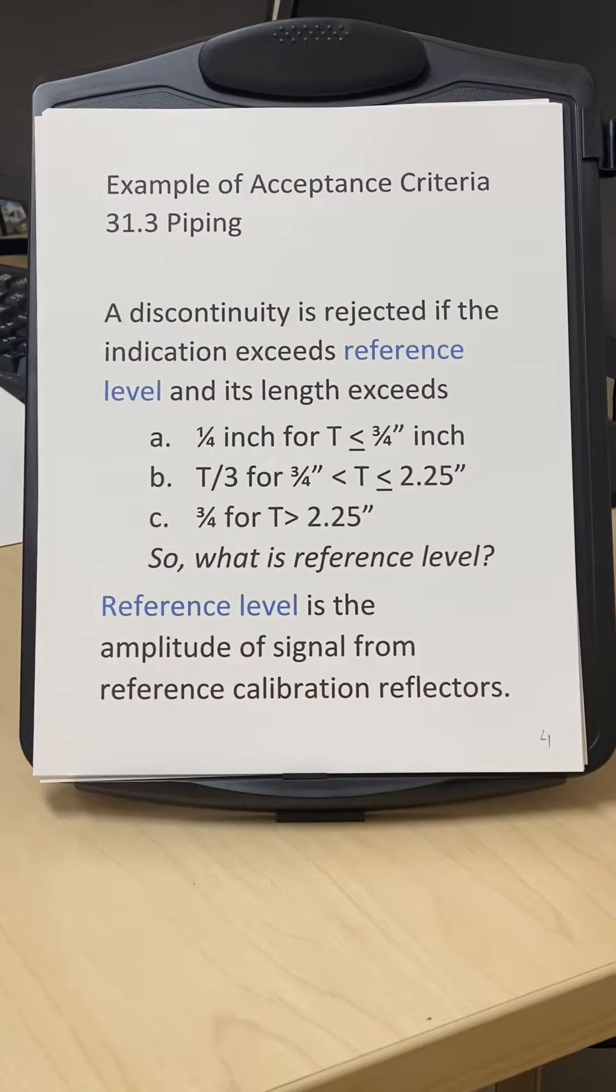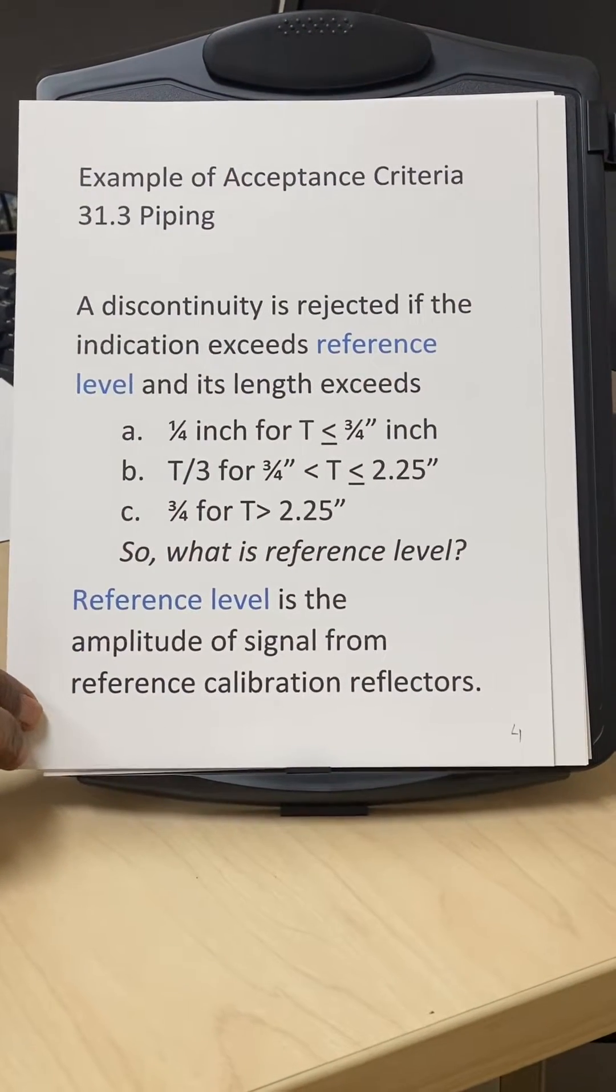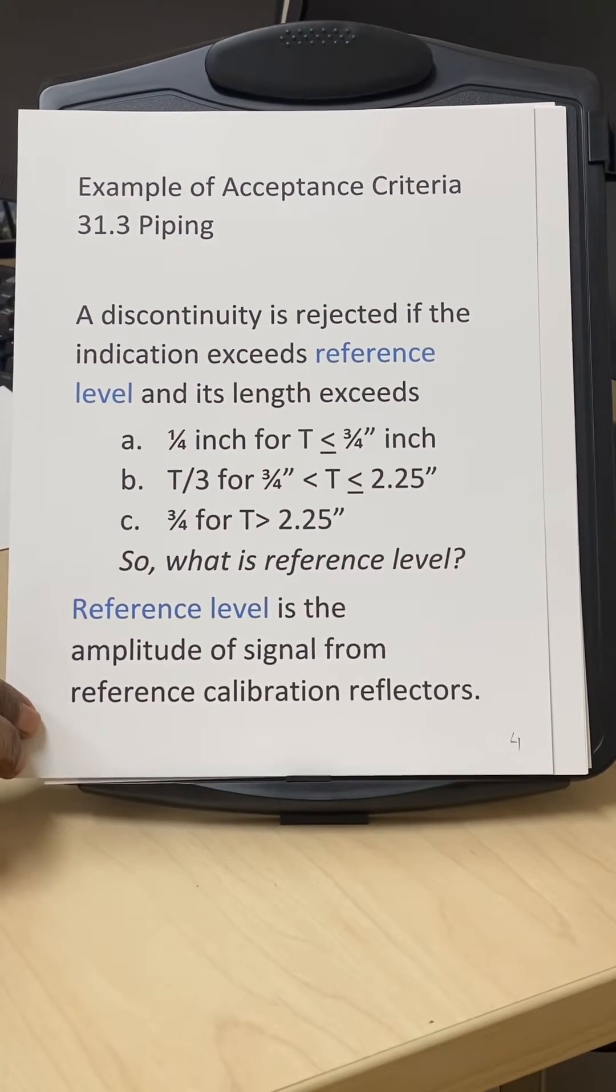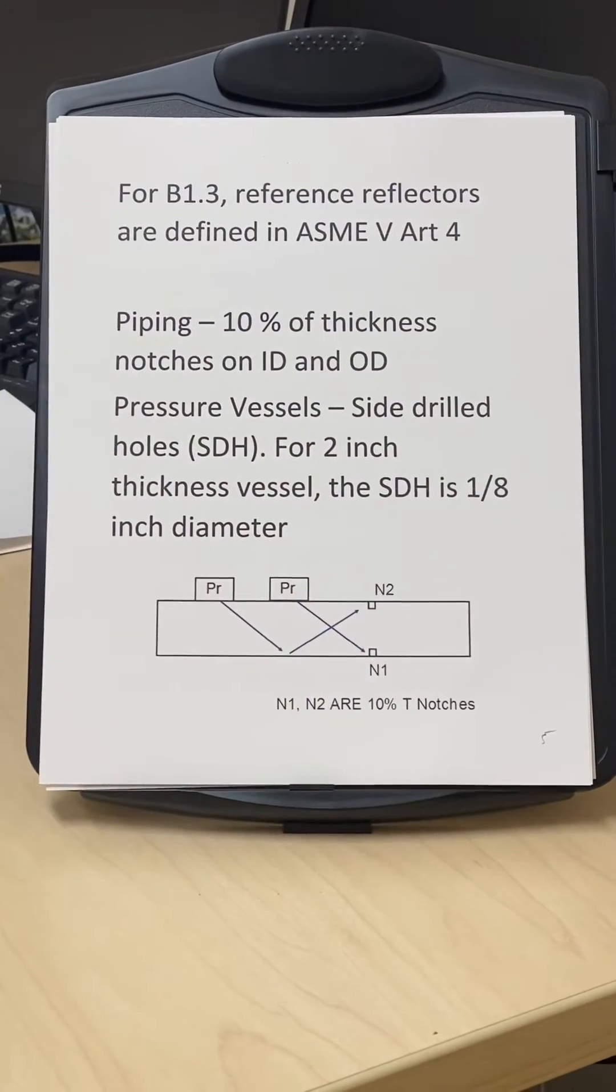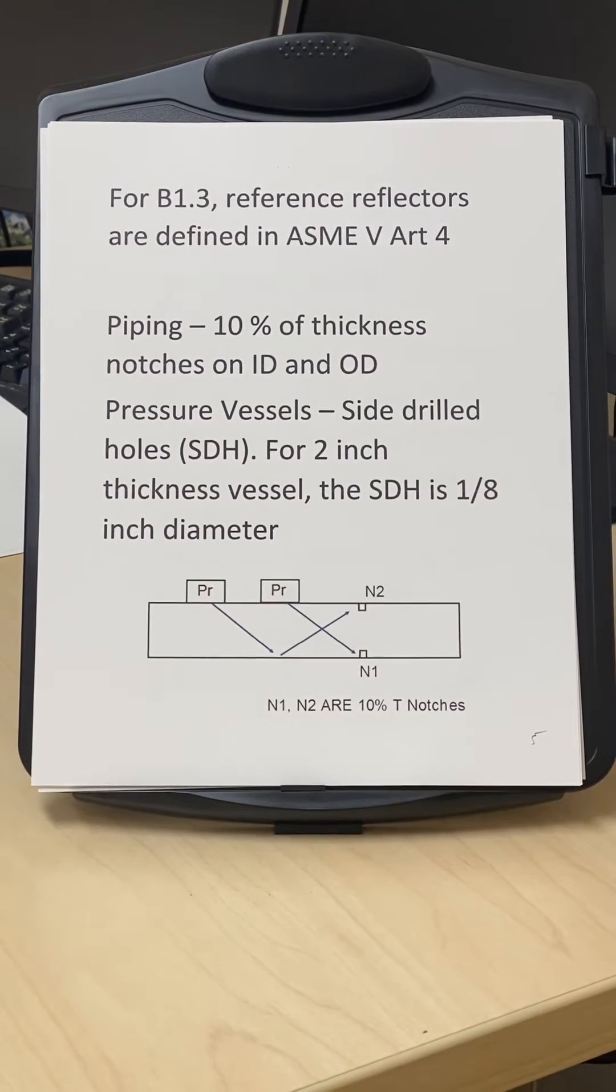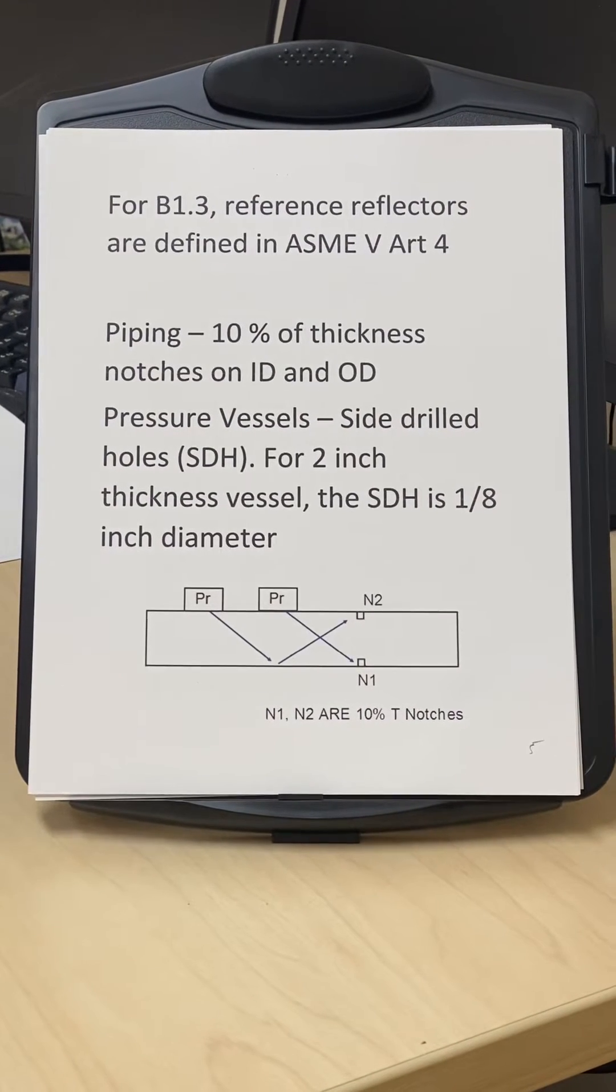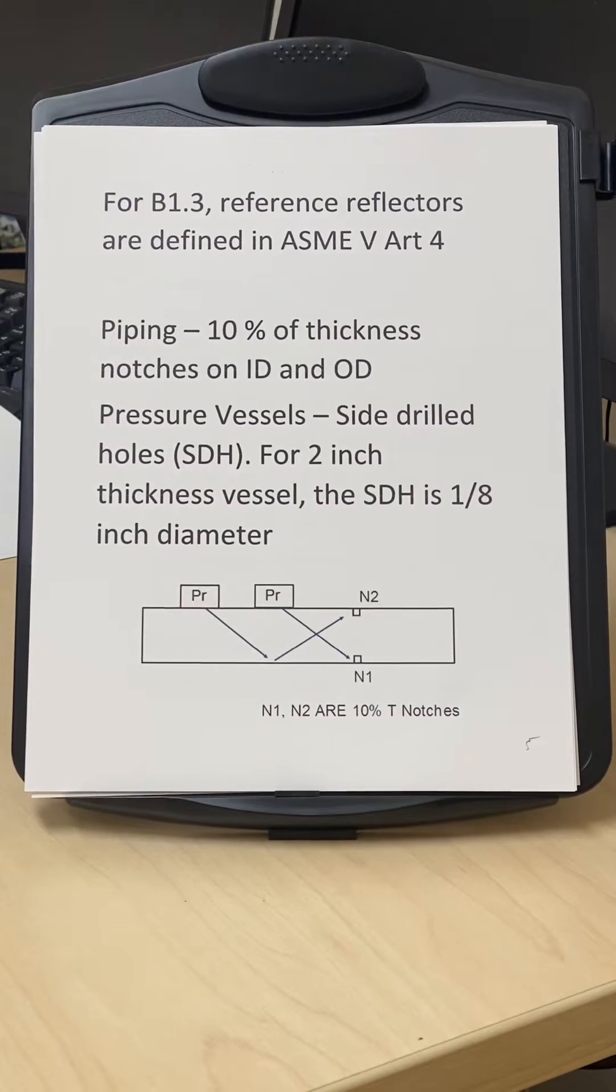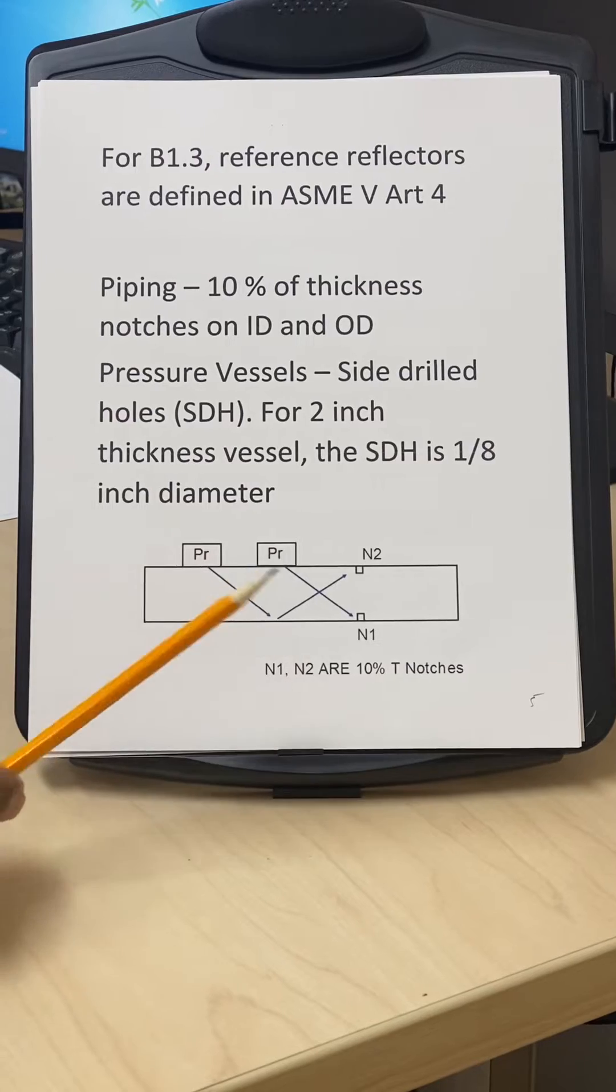The bottom line is what is the reference level and how do we establish it? The reference level is the amplitude of the signal from the reference calibration reflectors. For B31.3, the reference reflectors are defined in ASME Section 5 Article 4. For piping, typically we use 10% ID and OD notches.